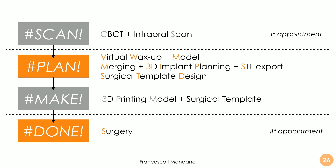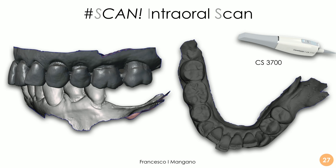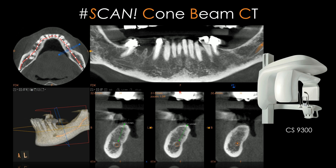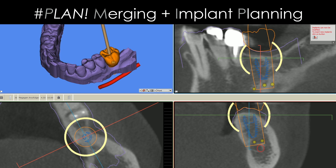I will show a simple case based on the concept of two appointments. The first appointment involves a cone beam CT and an intraoral scan. Then we have the plan, we fabricate our surgical templates and the 3D printed model, check the accuracy, and then proceed with surgery. We use a CS3700 for the intraoral scan of this partial edentulous patient — a very easy case. Then a cone beam CT is taken, and it is very important to avoid any possible motion artifacts. The modern devices allow us to control the position of the patient. We then merge the information from the intraoral scanner with the information from the cone beam CT, and proceed with our implant planning.